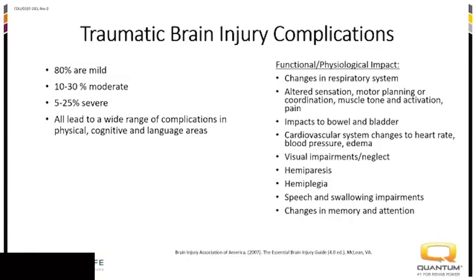When you see one brain injury, you've seen one brain injury — they're all very different. They can range from mild to moderate to severe, but all can have a range of medical complications — physical, cognitive, or language — that are going to impact mobility. Those things can include hemiparesis, hemiplegia, speech and swallowing, memory and attention, physiological changes in respiratory function, altered sensation, edema, and circulatory issues.